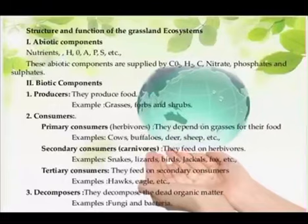The abiotic components of grasslands are the nutrients present in soil and the aerial environment. Elements like carbon, hydrogen, oxygen, nitrogen, phosphorus, and sulfur are supplied by carbon dioxide, water, nitrates, phosphates, and sulfates present in air and soil. In addition, some trace elements are also present in the soil.